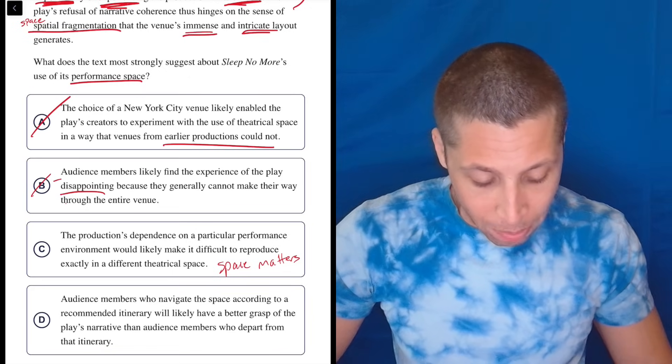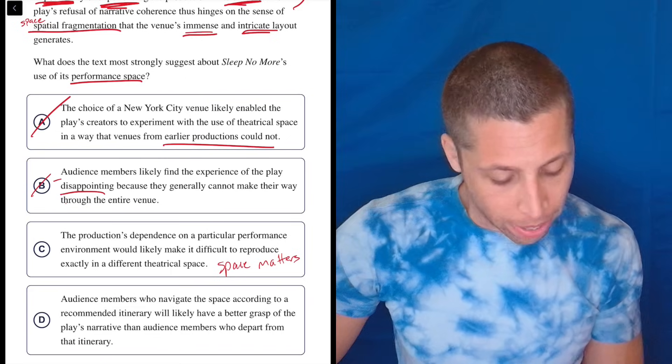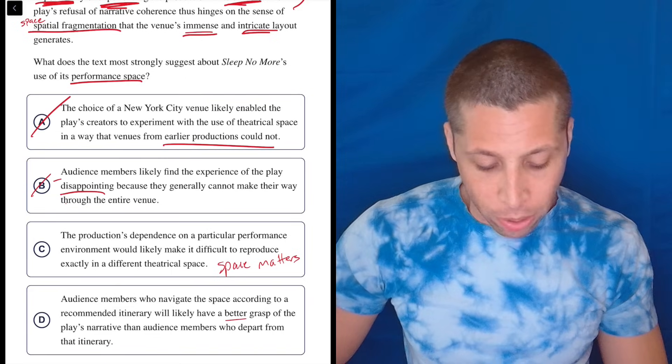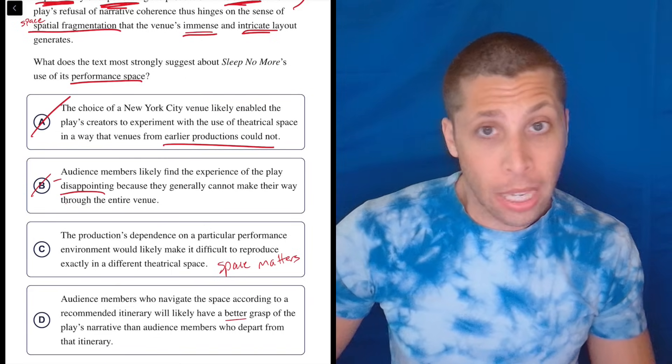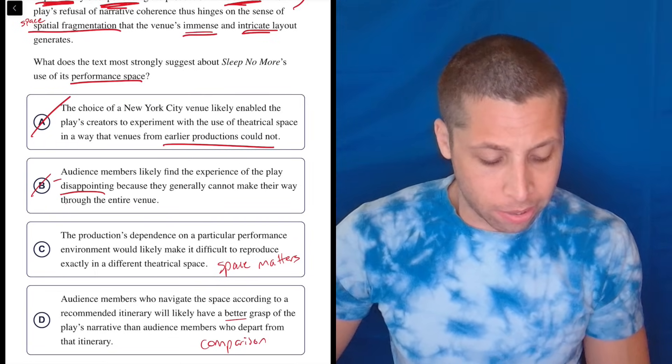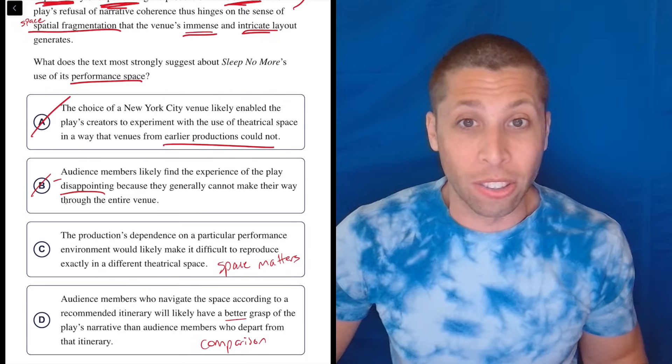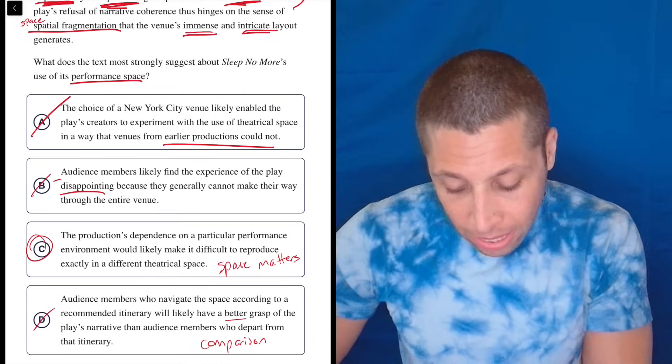Audience members who navigate the space according to a recommended itinerary will likely have a better grasp of the play's narrative than audience members who depart from its itinerary. I don't know. Let's make a comparison. I have no idea what the best way to do this is. I don't really care. That's not on here. So yeah, this doesn't make any sense. So it's going to be C.